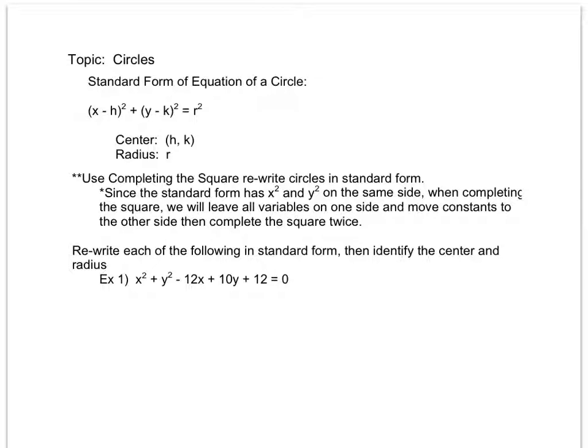If we are not given our equation in standard form, we will again use completing the square to change it to standard form. And since now we have both x squared and y squared on the same side, when we complete the square we're going to have all of our variables on one side and all of our constants on the other side and we'll complete the square twice.